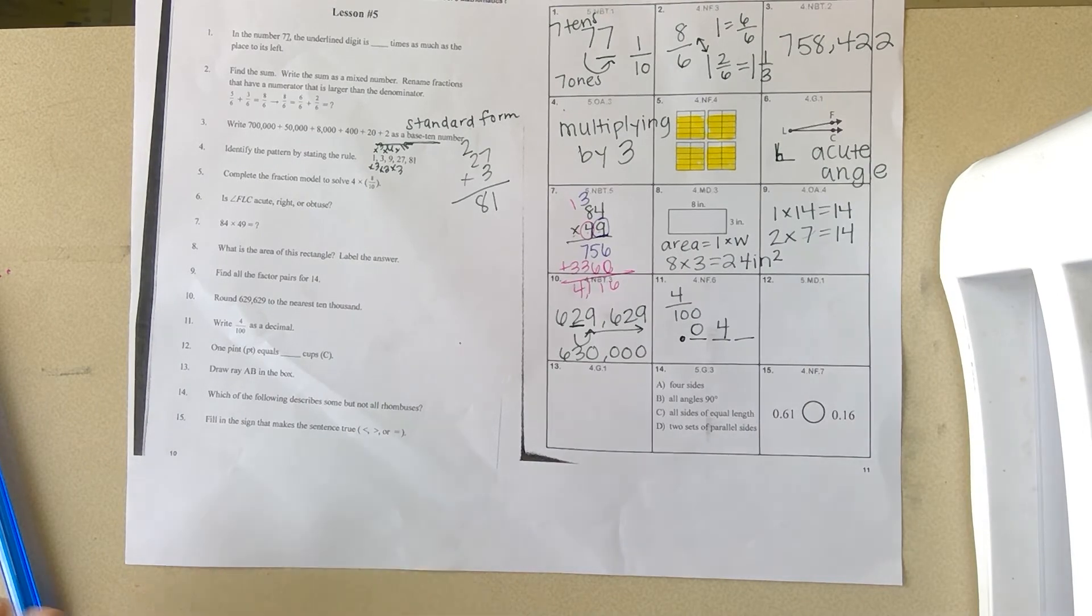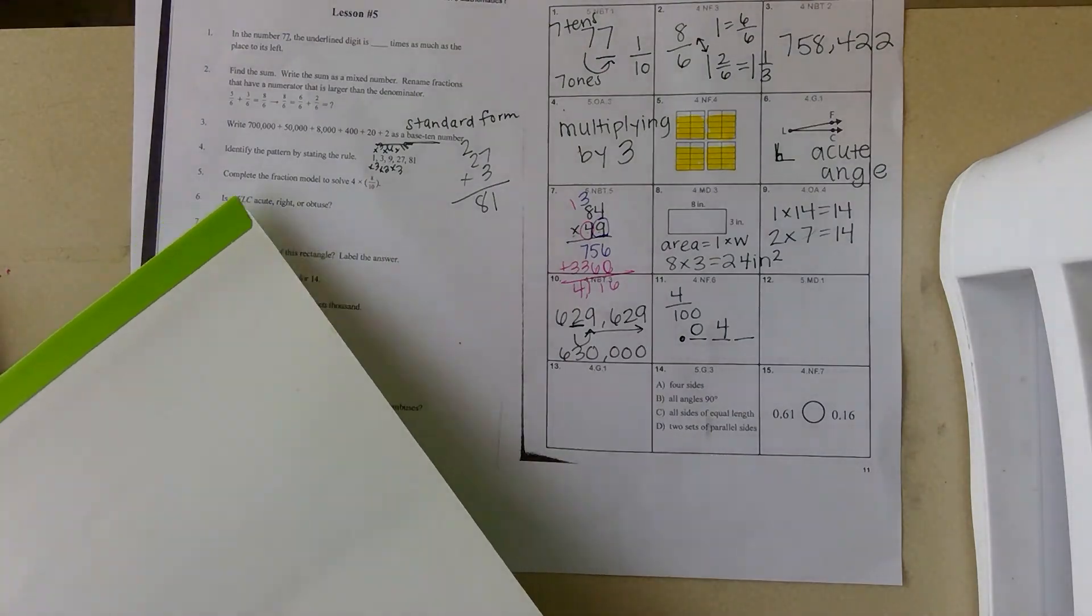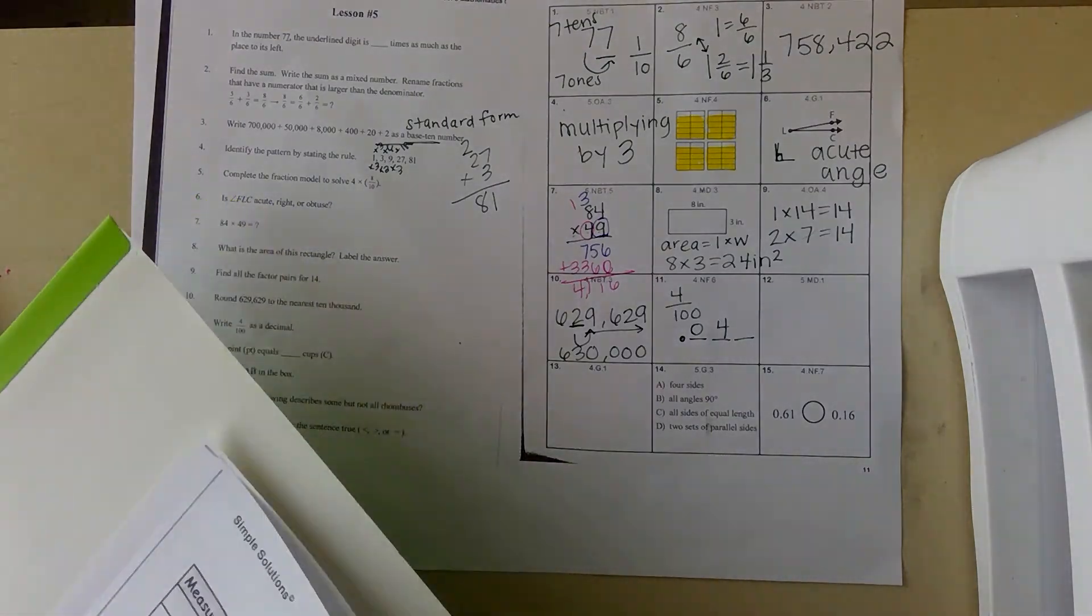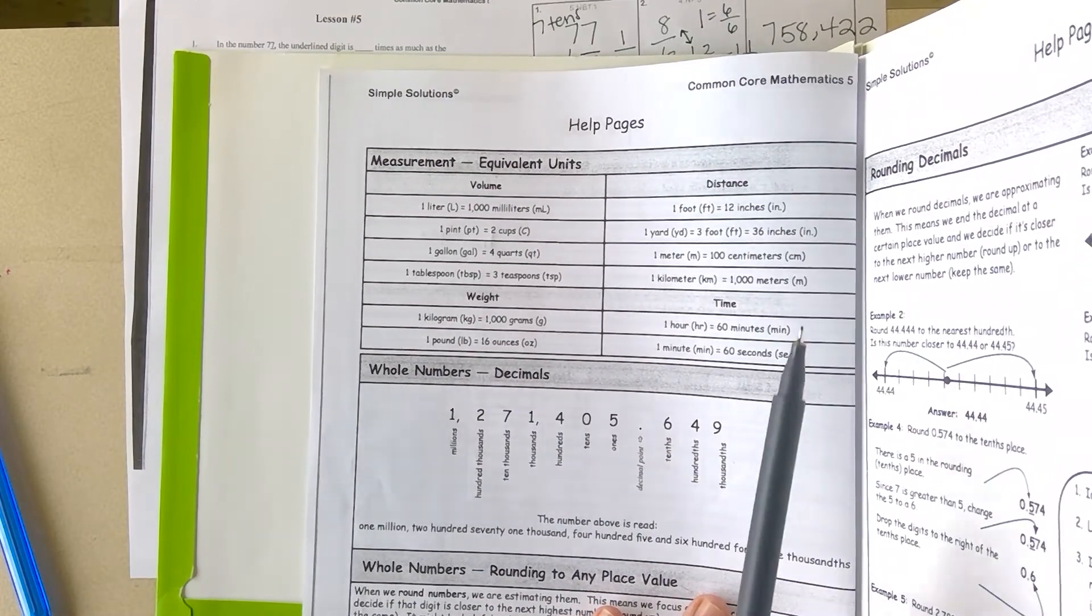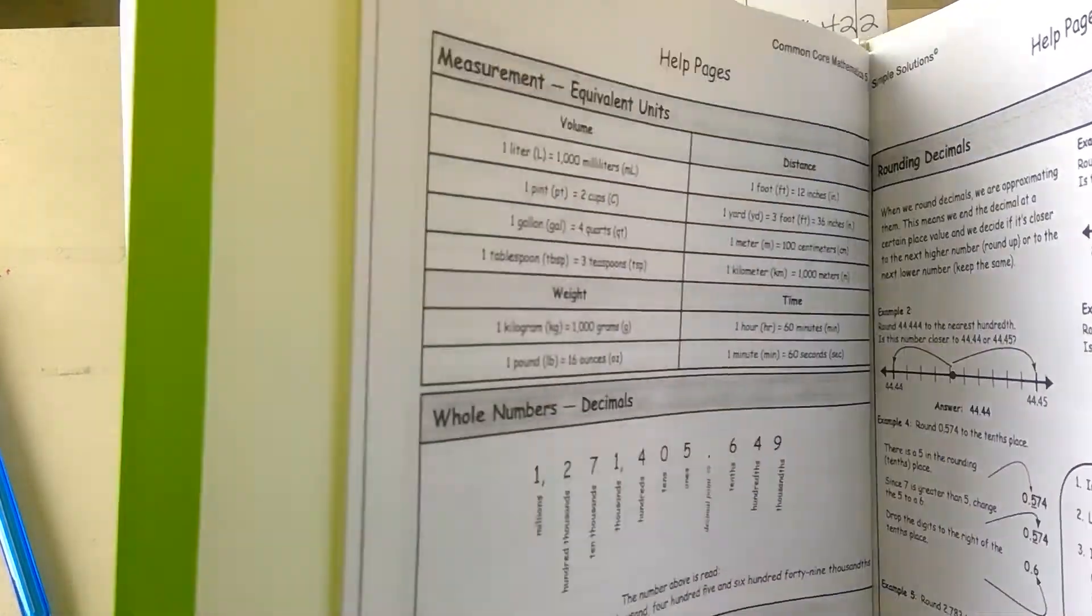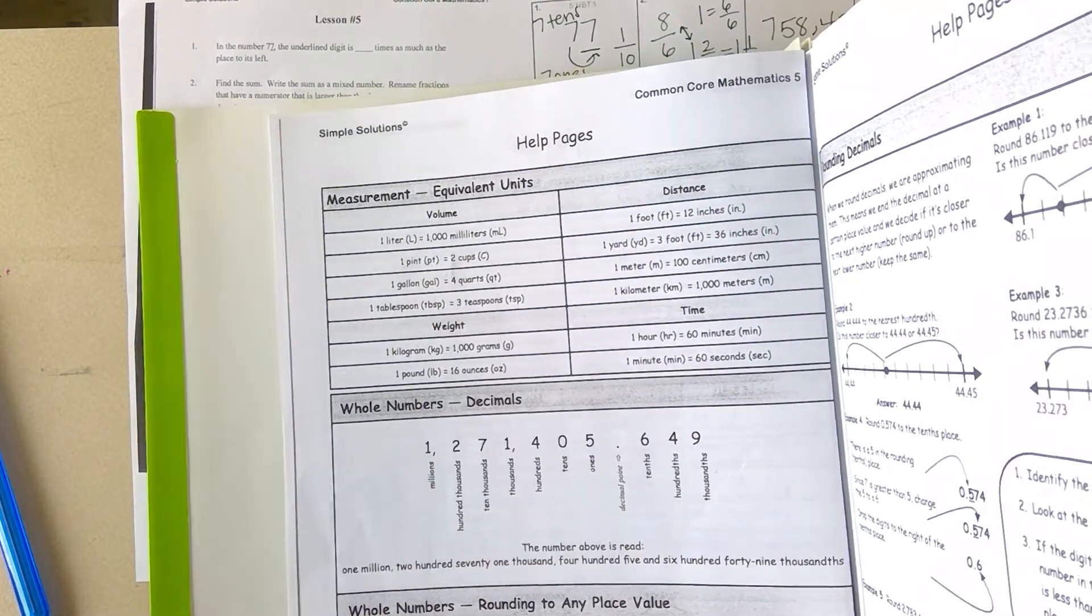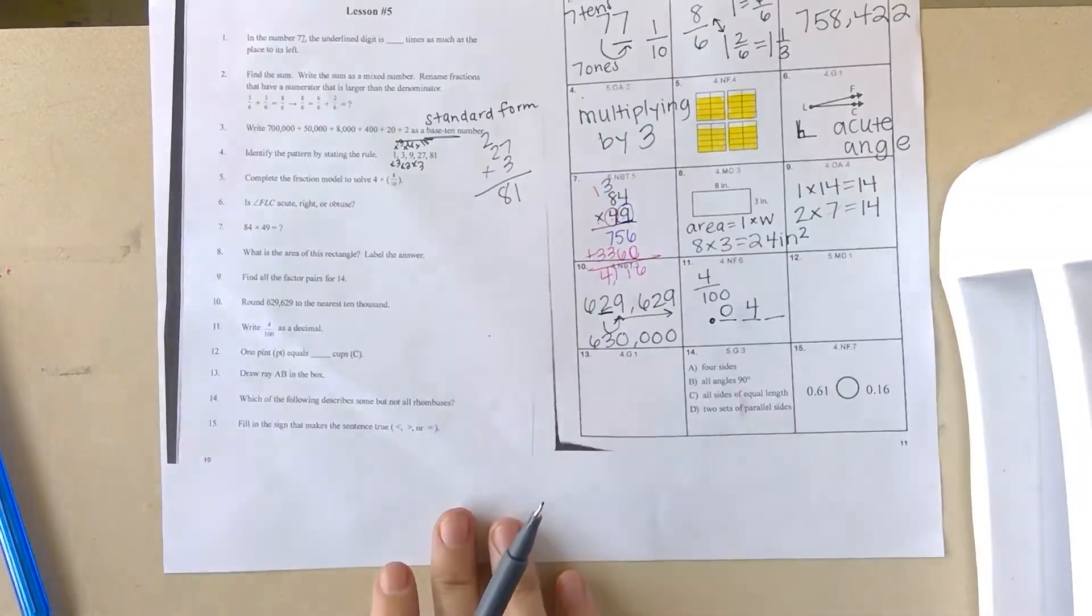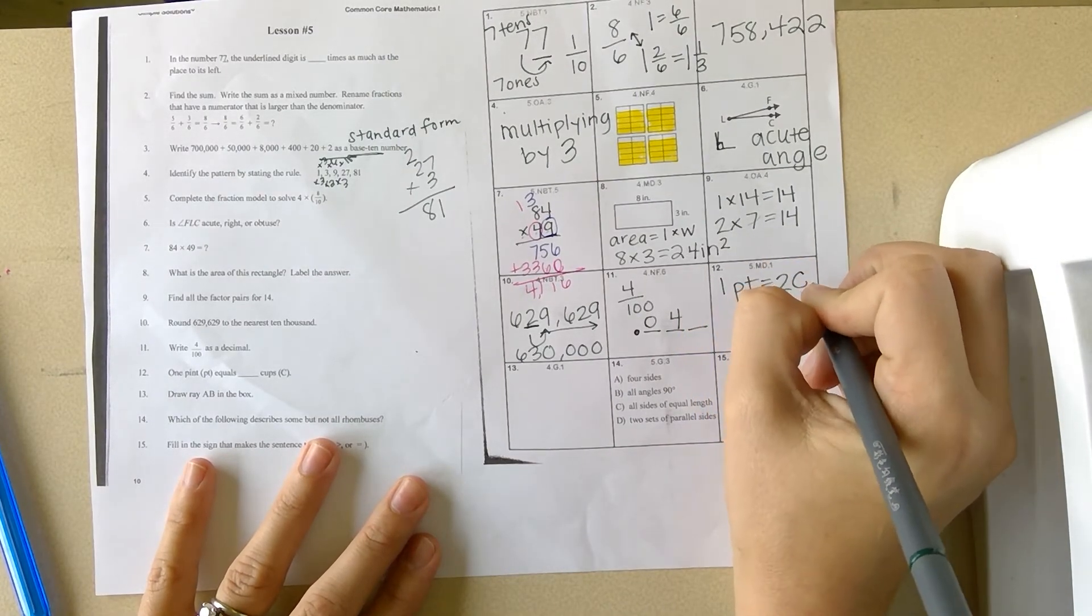Number twelve: one pint equals how many cups? You can go into your help pages. You'll open one, two times. You go to your measurement equivalency. One pint is two cups. You will just write: one pint equals two cups.